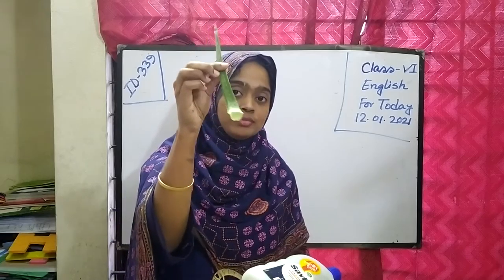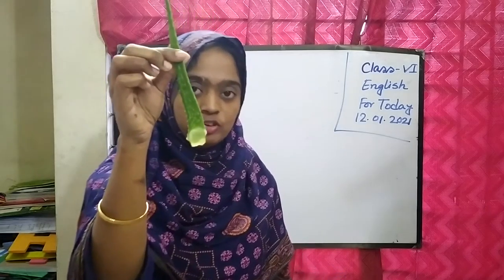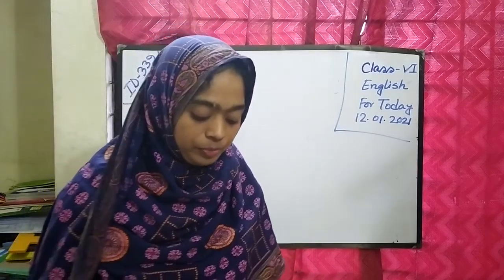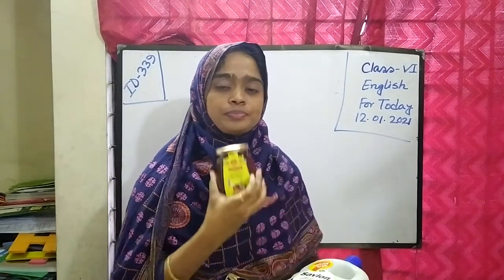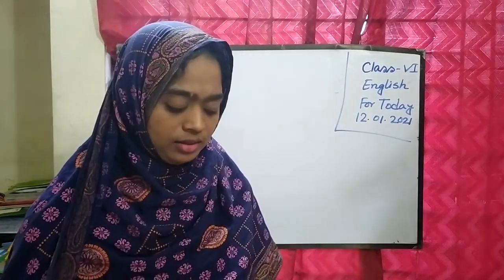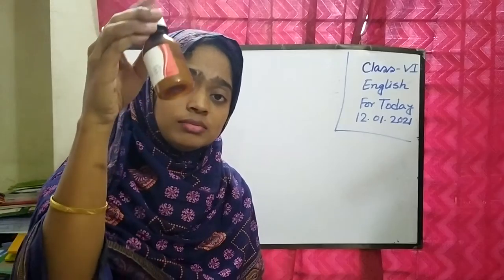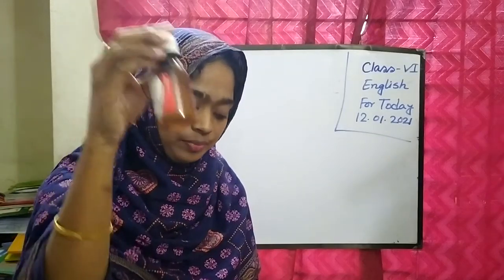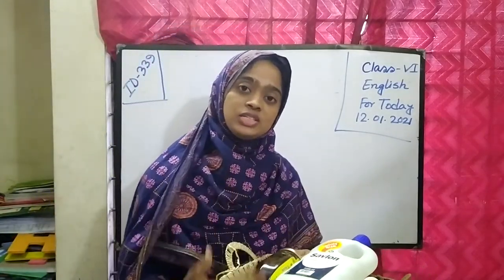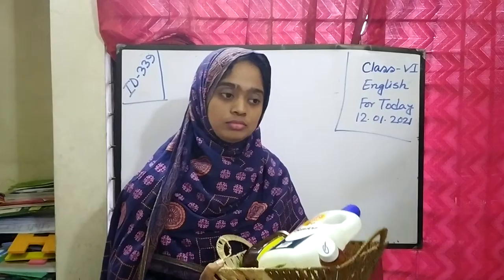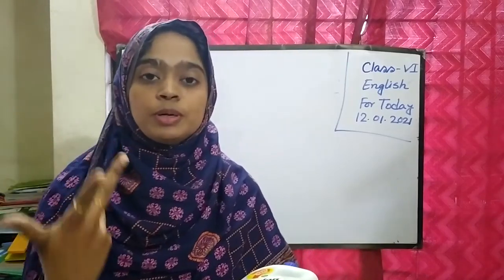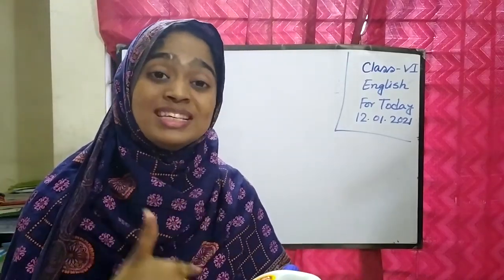This one? Aloe vera plant. Yes, one leaf of aloe vera. This one? Honey. Okay. This one? Medicine. Now, can you tell me how these are related? In which purposes are we using these?